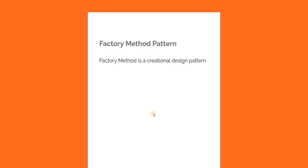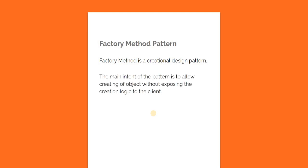Hello everyone and welcome to .NET Core Central. In today's video I'm going to talk about the factory method design pattern. Factory method is a creational design pattern, meaning it is used for creating instances of a type. The main intent of the factory method design pattern is to allow creation of objects without exposing the creation logic to the client. Now let's take an example and walk through what exactly this means.